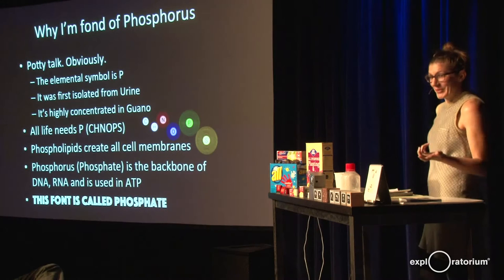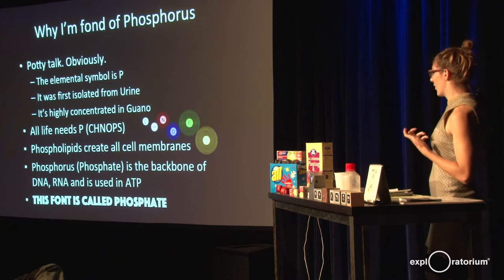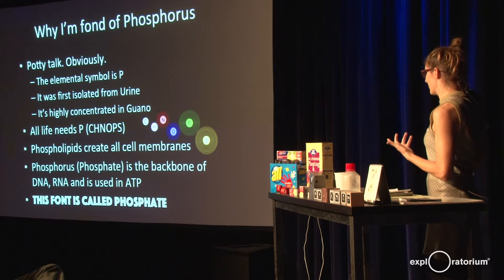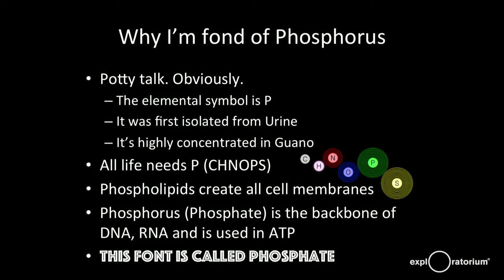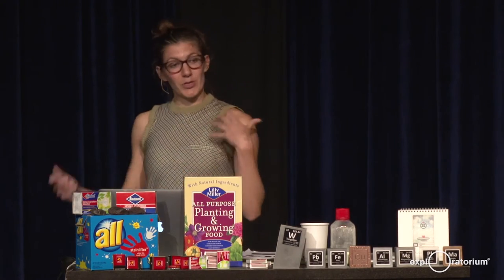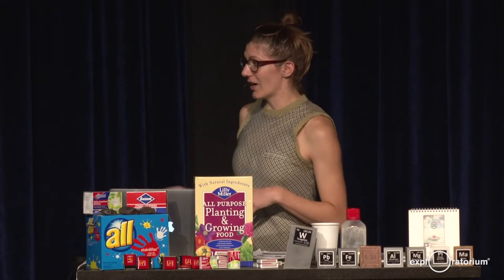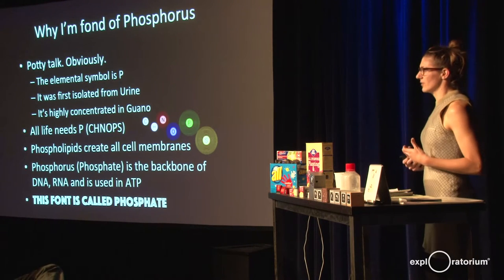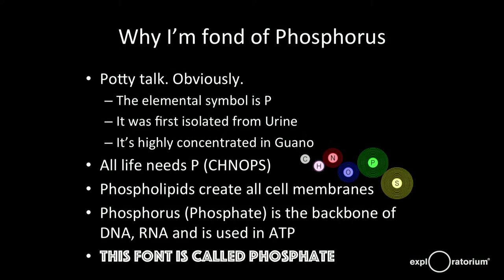I also like it because it's in poop — it's highly concentrated in guano, which is bat poop or bird poop, and that's one of the ways they make fertilizer. Getting back to astrobiology: all life needs phosphorus. It's in the backbones of DNA, and it's in ATP. If you want to be really cool and hip in the astrobiology world, you've got to know CHNOPS — it stands for the six elements required for all life as we know it: carbon, hydrogen, nitrogen, oxygen, phosphorus, sulfur.